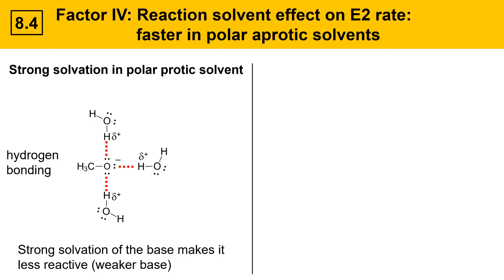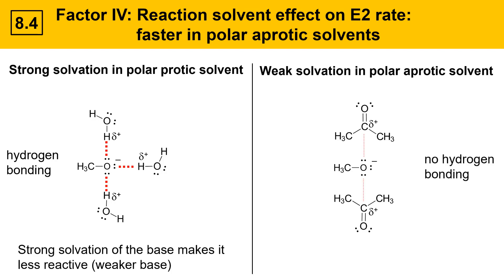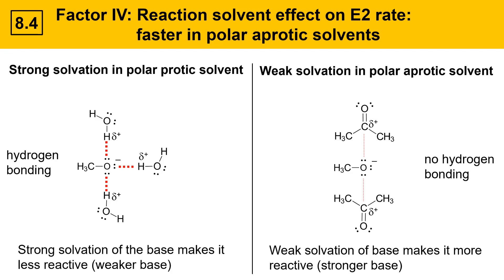In contrast, in a polar aprotic solvent there is weak solvation. The same base, methoxide, surrounded by a polar aprotic solvent like acetone has partially positive carbons directed toward the negatively charged oxygen, but these interactions are much weaker — they're dipole-dipole interactions, not hydrogen bonds, and they're more easily broken. The weak solvation of the base makes it more reactive; it's a stronger base in acetone.